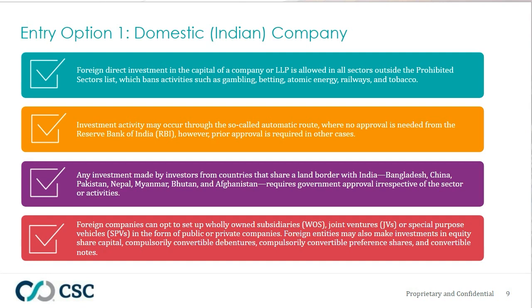Foreign companies can opt to set up wholly owned subsidiaries, joint ventures, or SPVs in the form of public or private companies. Foreign entities can make investments in equity share capital, compulsory convertible debentures, preferred shares, and convertible notes. Prior approval from the Reserve Bank of India is sometimes required even outside prohibited sectors, particularly in strategic industries.